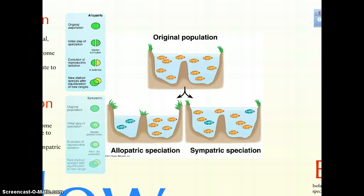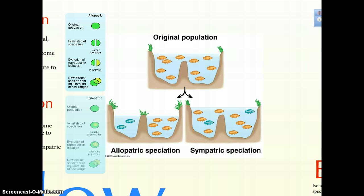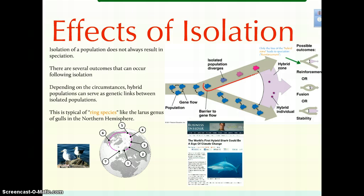Hello and welcome back to our second part here. We just ended with a discussion of allopatric and sympatric speciation — the creation of different species either due to a physical barrier that separates them or some other barrier that restricts gene flow within populations.